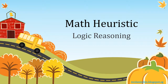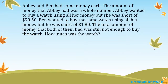Let's take a look at the question. Abby and Ben each had some money. The amount of money Abby had was a whole number. Abby wanted to buy a watch using all her money but she was short of ninety dollars and fifty cents. Ben wanted to buy the same watch using all his money but he was short of one dollar eighty cents. The total amount of money that both of them had was still not enough to buy the watch.